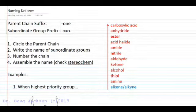Let's look at naming ketones. Ketones are a priority group and when they are the highest priority group in your compound, we will name them as a ketone parent chain with the O-N-E suffix.